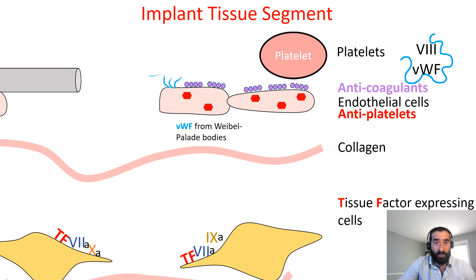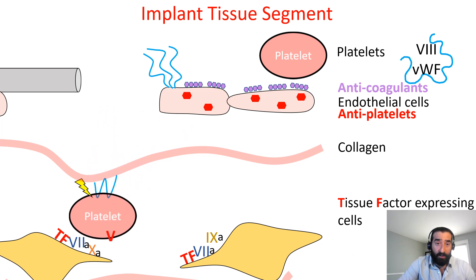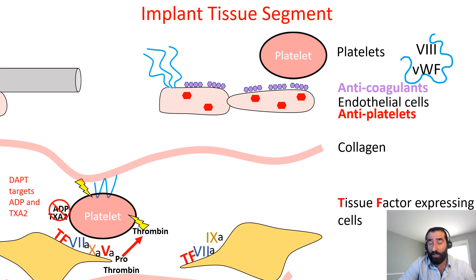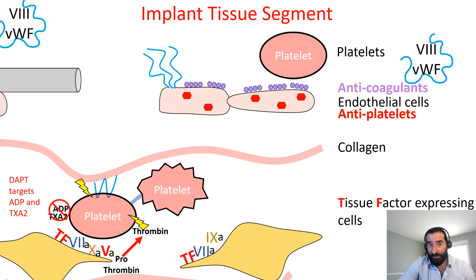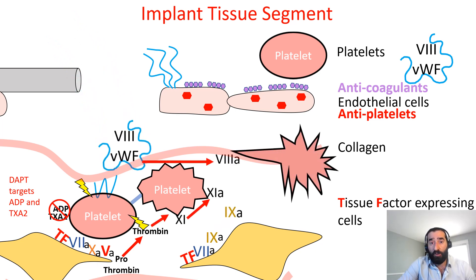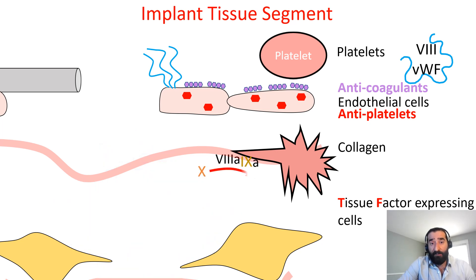When you have an implant, the endothelial cells will start secretion of certain molecules and platelet adhesion will occur. Platelets will start secretion of their own signaling molecules and a small amount of priming thrombin will be generated, which is important for the activation of platelets. ADP and thromboxane A2 are also important activation molecules and they are the targets of DAPT therapy. As the platelets get activated, they change shape and form bridges, and on the surface of these activated platelets, there are a series of protein complex formations that facilitate the explosion of thrombin generation.